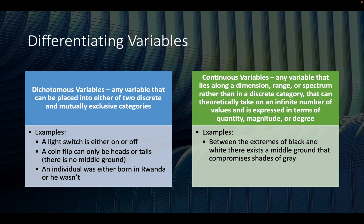With continuous variables, this is any variable that lies along a dimension, a range, or a spectrum — rather than in a discrete category. Continuous variables can take on, theoretically, an infinite number of values, expressed in terms of quantity, magnitude, or degree. For example, between the extremes of black and white, there exists a full middle ground comprising many different shades of gray.